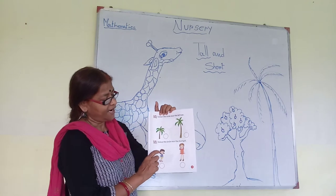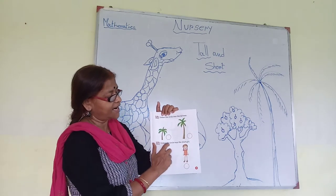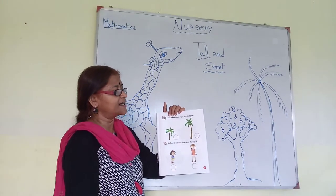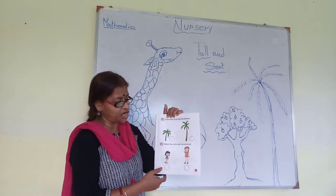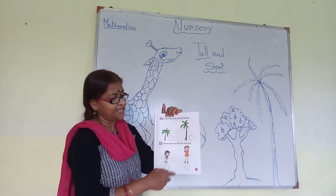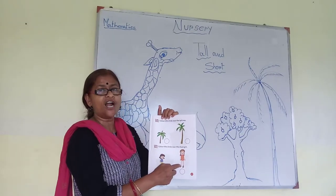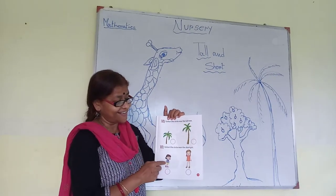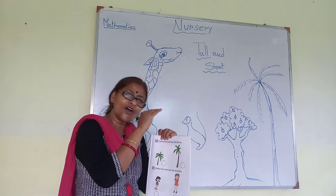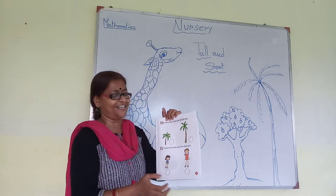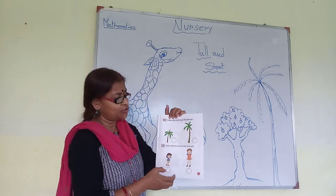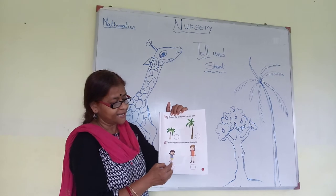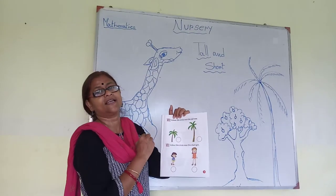Look at the heading: color the circle near the short girl. Which is the short one? Is it short? No. This girl is the short girl. So, I will color this circle.